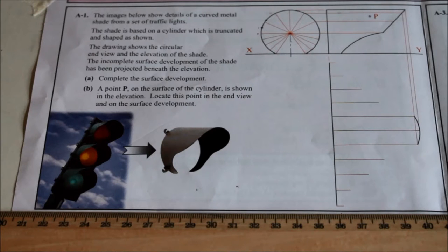We'll do the development first. The image below shows the details of a curved metal shade for a set of traffic lights. The shade is based on a cylinder which is truncated and shaped as shown. The drawing shows a circular end view and the elevation of the shade. The incomplete surface development of the shade has been projected beneath the elevation. Part A: Complete the surface development. Part B: Find point P.